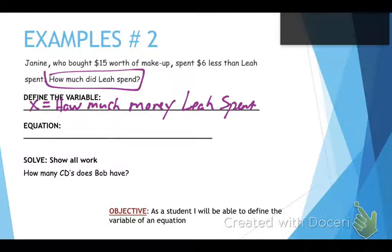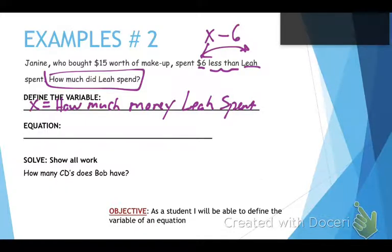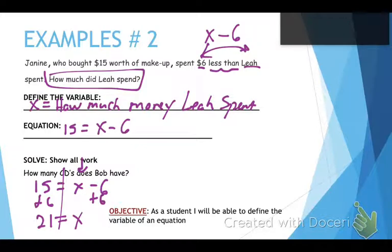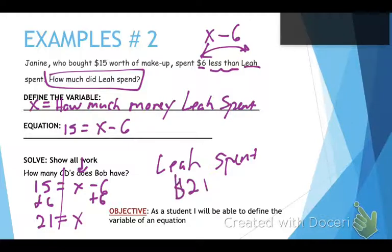Now we need to write the equation. It says Janine spent $6 less than Leah. Remember, 'less than' is one of those flips. So we say X minus 6, and 15 is equal to X minus 6. To solve, we rewrite it, draw our line down the middle, do the opposite of minus 6 — which is plus 6 on both sides — and that gives us 21 equals X. So Leah spent $21.